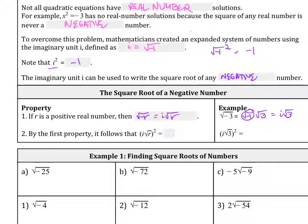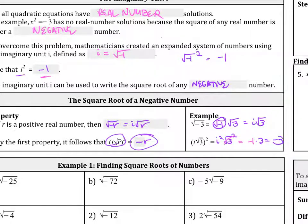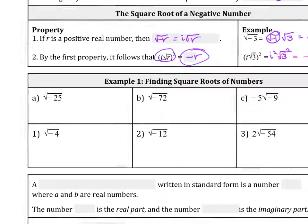By the first property, it follows that I times the square root of r, squared, is going to equal negative r. The square applies to the I and to the square root of 3. The square root of 3 squared goes away, and I squared equals negative 1, so we get negative 1 times 3, which is just negative 3. Notice it's simply the negative of whatever was inside.